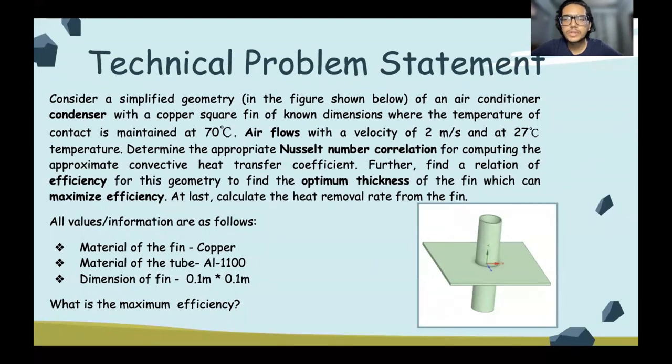So this is the technical problem statement. We are considering the simplified geometry, which is as shown in this figure. This is the geometry of an air conditioner condenser with a square copper fin with the dimensions 0.1 meters by 0.1 meters. Material of the tube is aluminum 1100 and we have been given the following data. The temperature of contact is maintained at 70 degrees Celsius. The air is flowing with a velocity of 2 meters per second and at 27 degrees temperature.